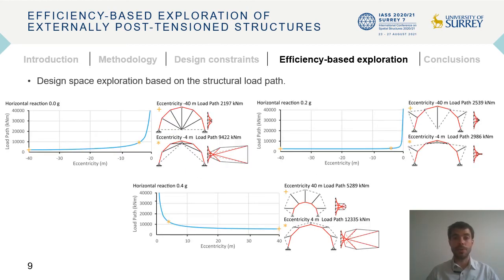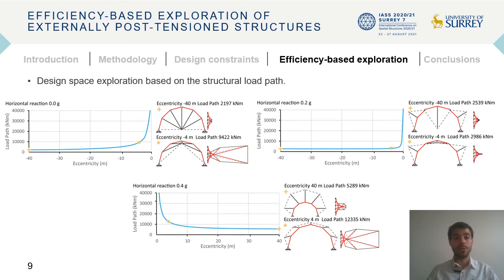Nevertheless, more configurations can be attained when the orientation of the struts connecting the compression chord and the post-tensioning system is freed. The figure on the slide shows the variation of the load path with the eccentricity for different values of the horizontal reaction when the orientation of the struts is chosen to minimize the structural load path. It can be seen that when the post-tensioning system is completely below the compression chord, the optimal configurations correspond to a degenerated case in which all struts converge to a single point. It is also observed that in all cases the load path decreases as the eccentricity increases.